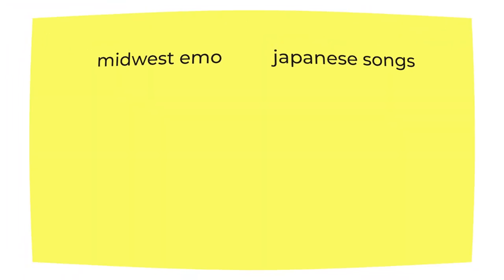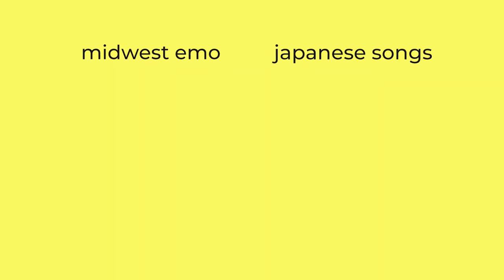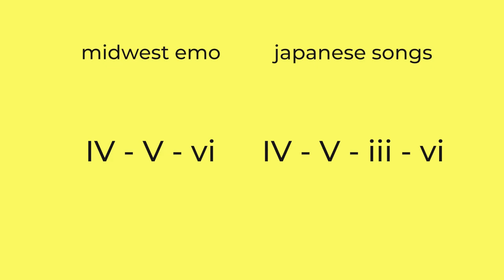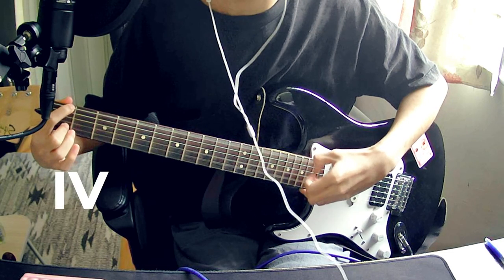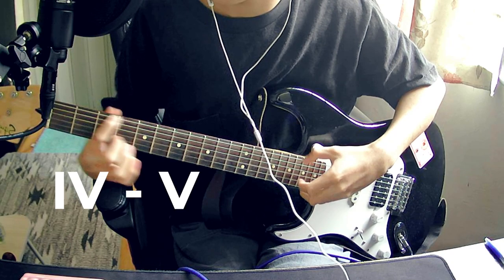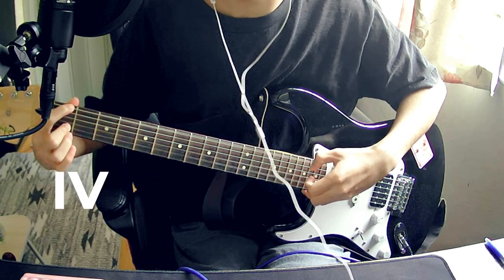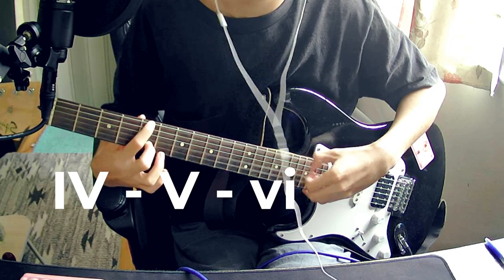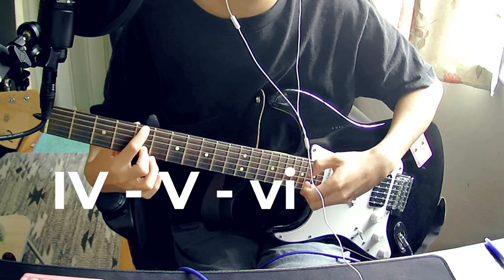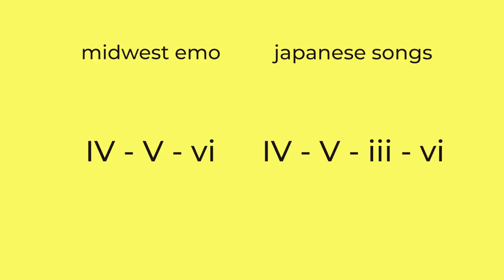Let's say we are in the key of C major and we want to talk about F major chord. F is the fourth note in the C major scale and because it's a capitalized letter, therefore it is an F major, not an F minor. So Midwest Emo songs generally follow kind of the same chord progressions as a contemporary Japanese song. For example, let's say the 4-5-6 progression. This is a really commonly used Japanese chord progression that you can also use in the context of Midwest Emo.